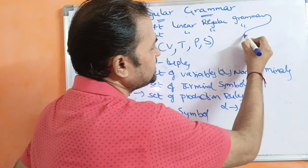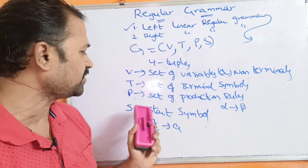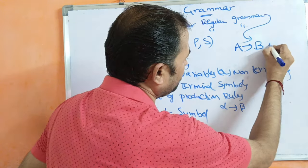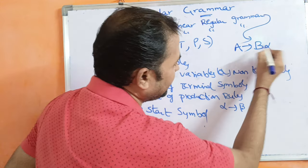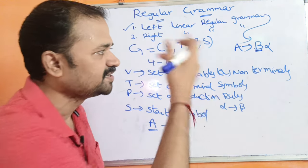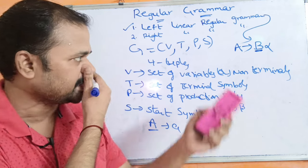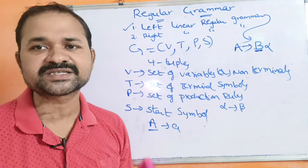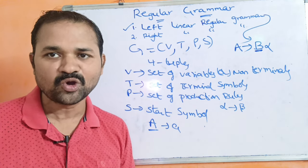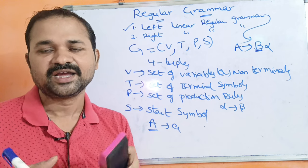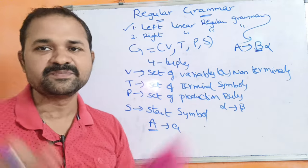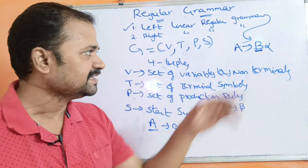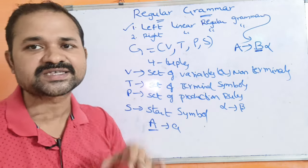In left linear grammar, the production is in the form A implies B alpha. This means that on the right hand side, the leftmost symbol is always a non-terminal. Here, capital A and capital B are non-terminals or variables, whereas alpha means a terminal symbol — it may be a lowercase letter, digit, or symbol. Epsilon is also considered a symbol.